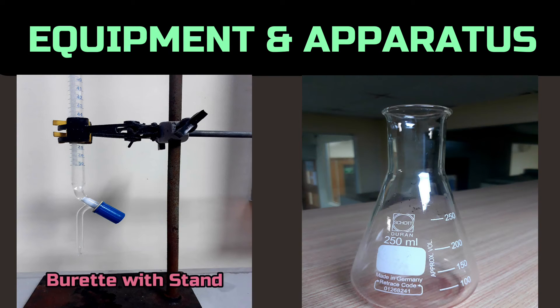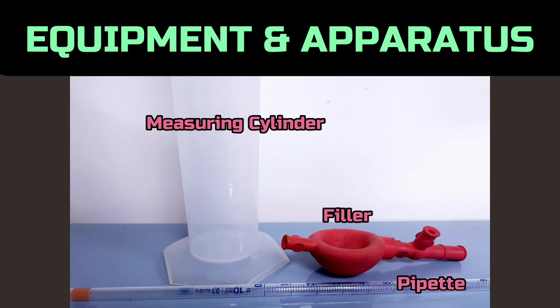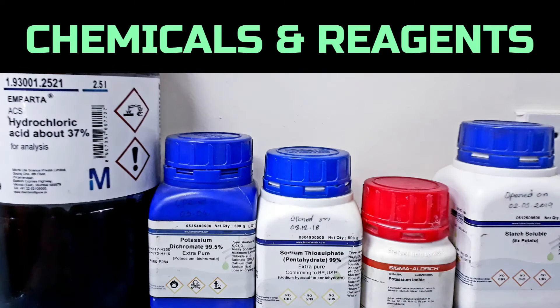Among the apparatus and chemicals, we need a burette with stand, conical flask, pipette with filler, measuring cylinder, concentrated hydrochloric acid, potassium dichromate, sodium thiosulfate, potassium iodide and starch.